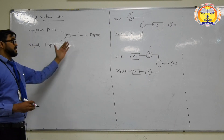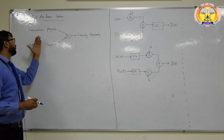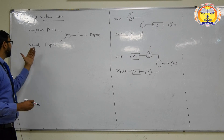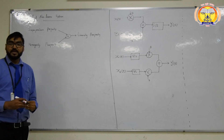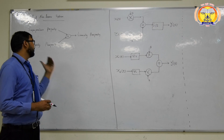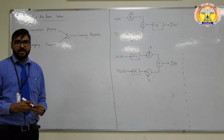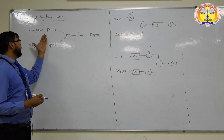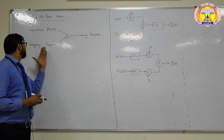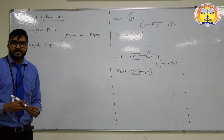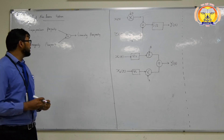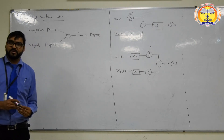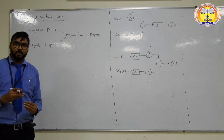The linearity property of a system is basically the sum of two fundamental properties: the first is the superposition property, and the other is the homogeneity property. The combination of these two properties is called the linearity property. A system which follows both superposition and homogeneity properties is called a linear system; otherwise it is called a non-linear system.